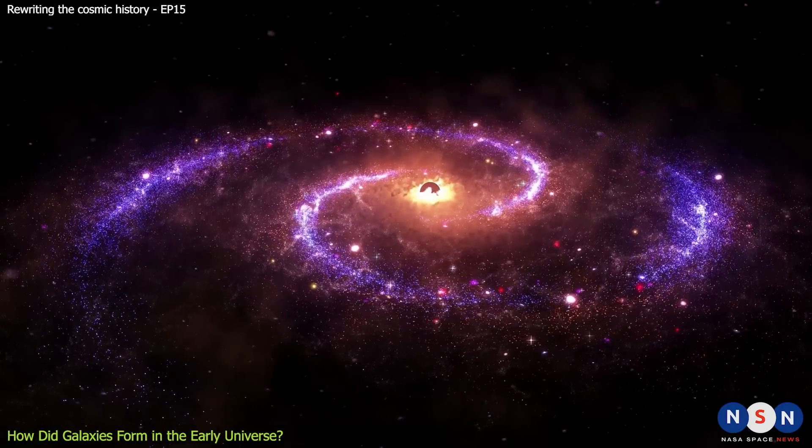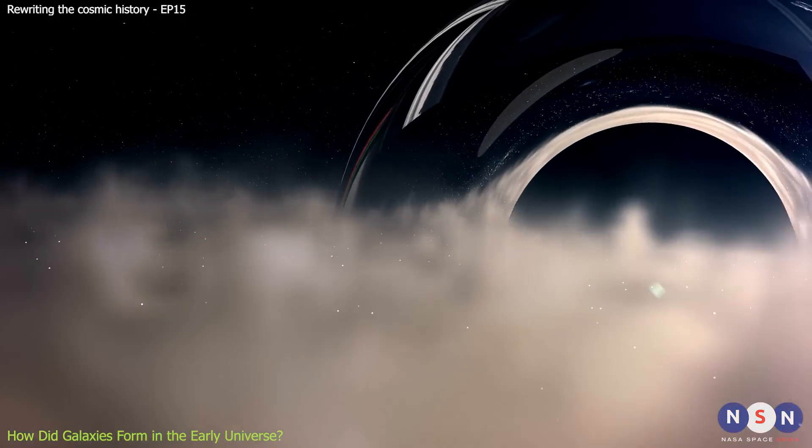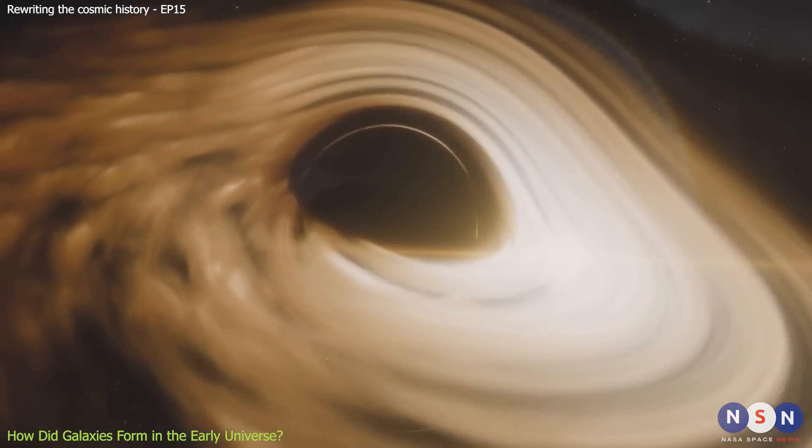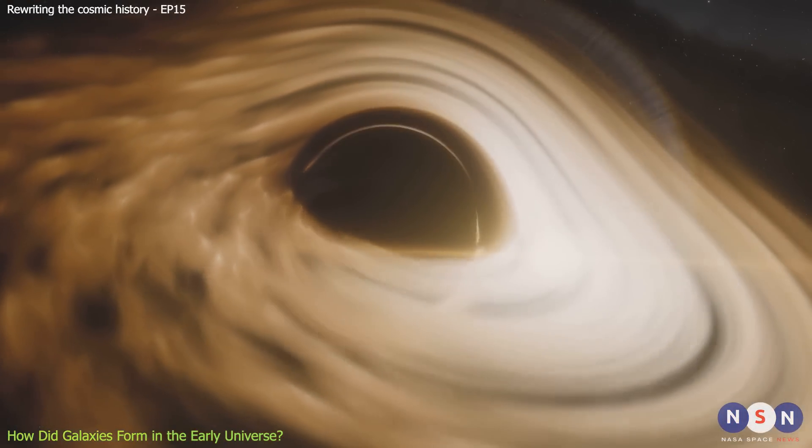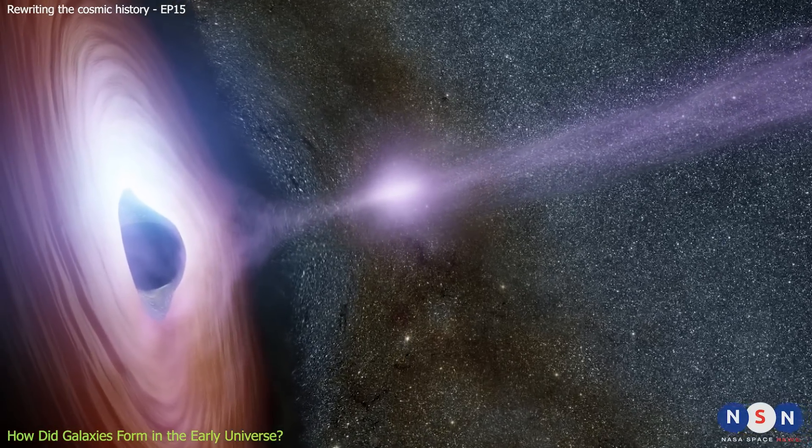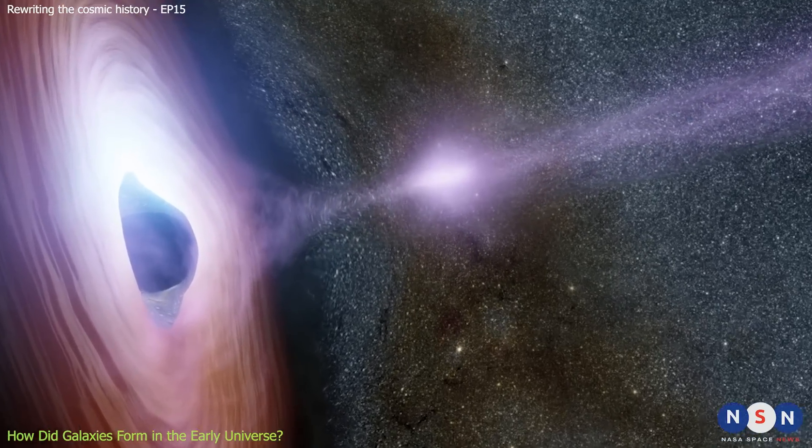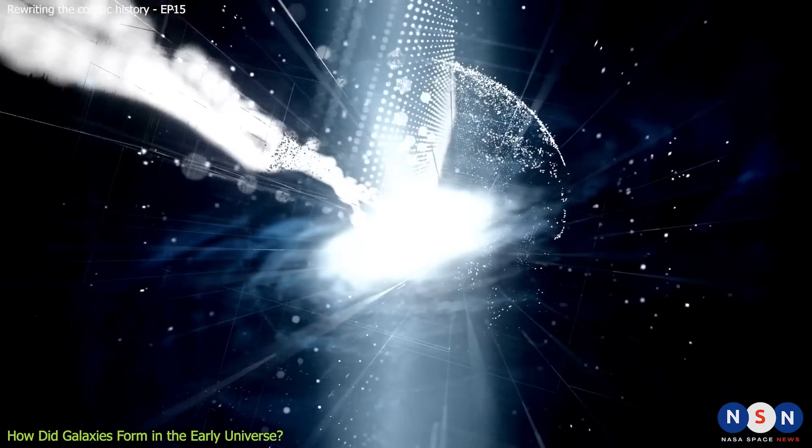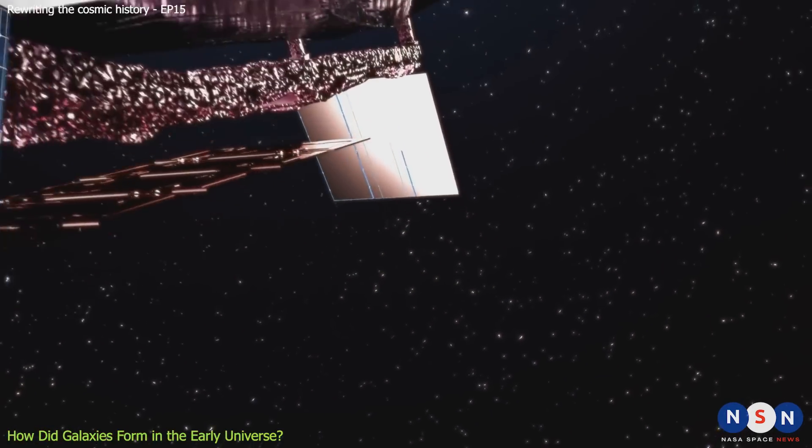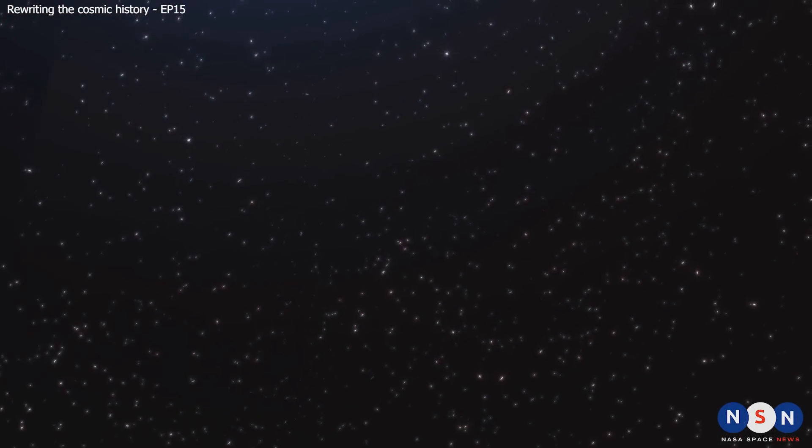But there is a problem with this scenario. It takes a lot of time for black holes to grow so big. And yet, we have observed supermassive black holes that existed when the universe was less than a billion years old. How did they form so quickly? And how did they become so bright? These questions have challenged our theories and models for a long time. But now, thanks to the James Webb Space Telescope, we might be closer to finding some answers.